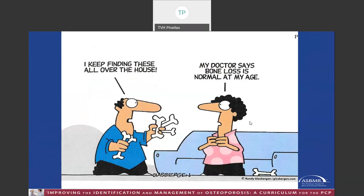As shown on a previous slide, bone loss after age 30 is inevitable. The goal of therapies, either lifestyle or pharmacologic, is to reduce the rate of bone loss, or once bone loss has occurred, to increase bone density to reduce the risk of fractures.